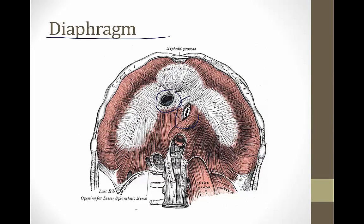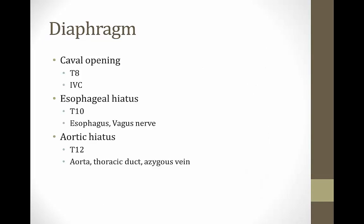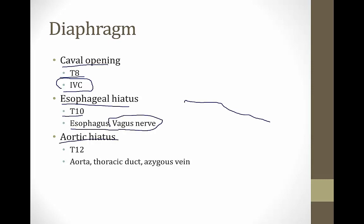The second opening is the esophageal hiatus, where the esophagus passes through. The third is the aortic hiatus. The caval opening is at the level of T8, the esophageal hiatus is at T10 — also carrying the vagus nerve — and the aortic hiatus is at T12, carrying the aorta, thoracic duct, and azygous vein.